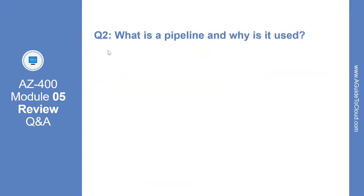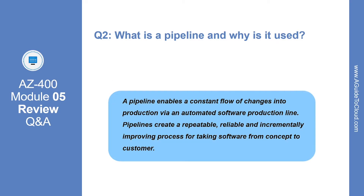Question number two: What is a pipeline and why is it used? A pipeline enables a constant flow of changes into production via an automated software production pipeline. Pipelines create a repeatable, reliable, and incrementally improving process for taking software from concept to customer.